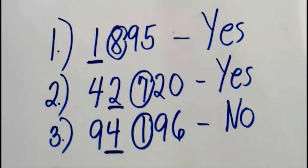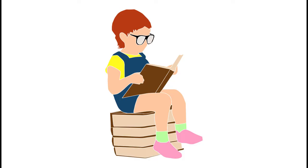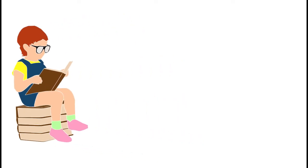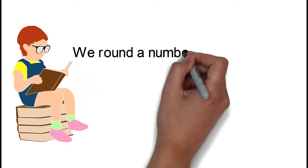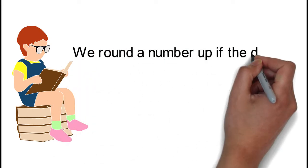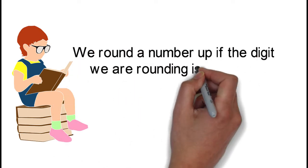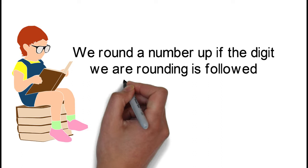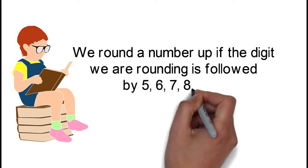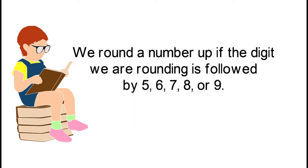Okay, good job — well done, everyone. Now, just always remember that we round a number up if the digit we are rounding is followed by 5, 6, 7, 8, or 9. Now that you already know when to round a number up, let me ask you this question: What will happen if we round a number up?